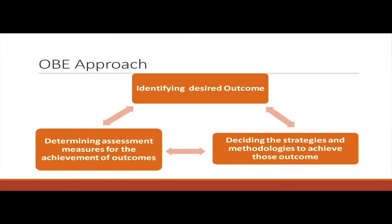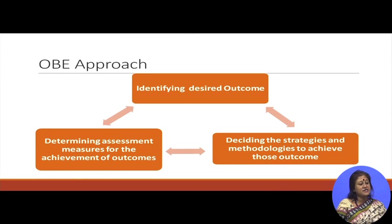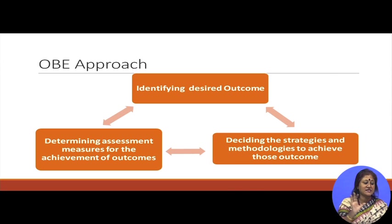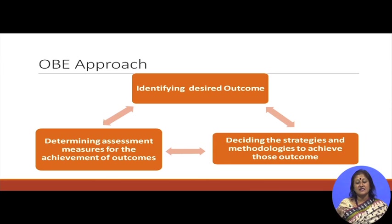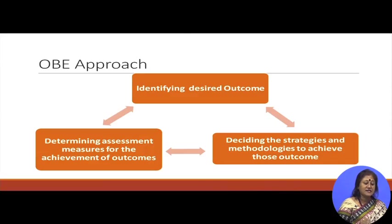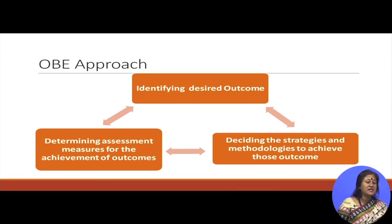Critical thinking is really very important. In the outcome based approach, the teacher — and the student — must first identify the desired outcome: this is what I want from this class. If the desired outcome is fixed, it is easy to decide the strategies and methodologies to achieve those outcomes. There is a link between identifying desired outcomes and deciding the strategies and methodologies. There is another component — determining assessment measures for achievement of outcomes — and whatever strategy and methodology the teacher uses, the assessment aligns with that outcome.